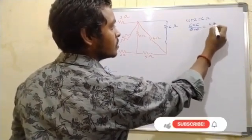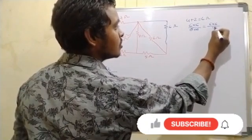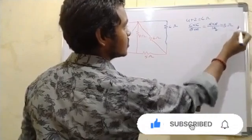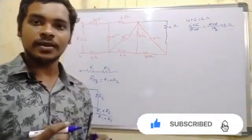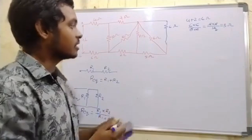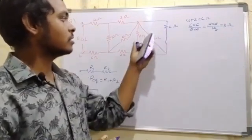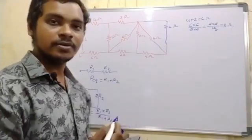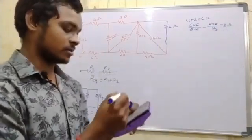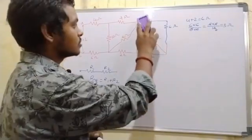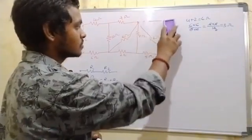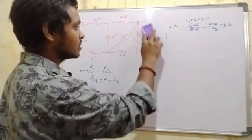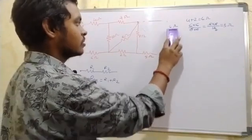6 into 6 by total resistance 6 plus 6. We have no additional resistance here. Finally, across the terminal we have 3 ohms.